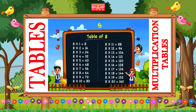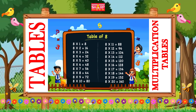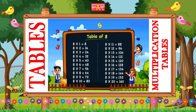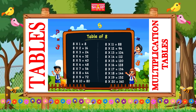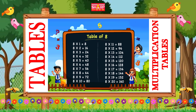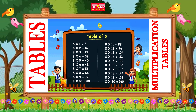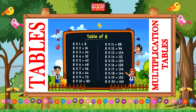Eight fours are thirty-two, eight fives are forty, eight sixes are forty-eight, eight sevens are fifty-six.